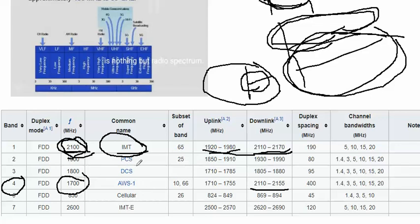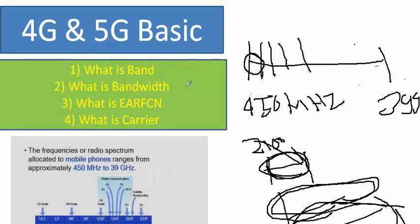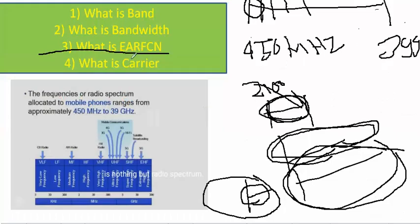Some bands are used in specific locations only — for example, Japan uses a different type of band division that is only used in Japan. Different countries using the same-looking band gets mixed up. So all organizations decided to give each band one unique identity. That unique identification is the UARFCN, which is unique all over the world, so each band is uniquely defined globally.